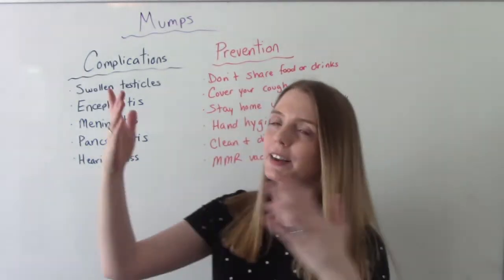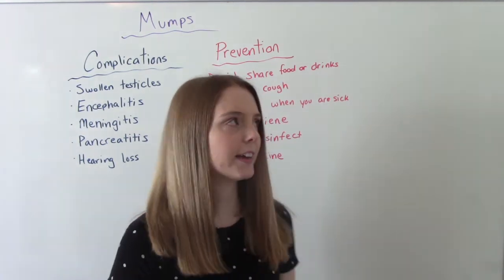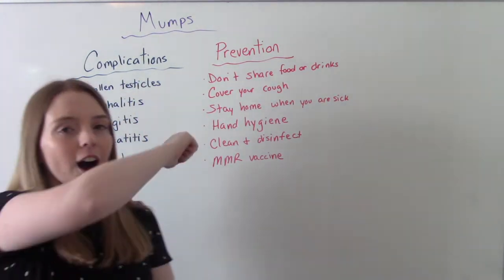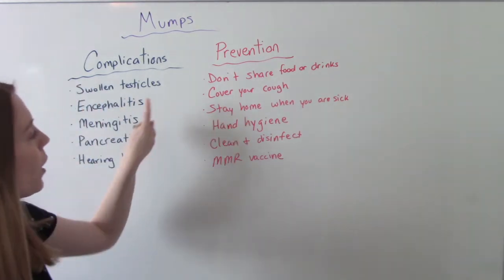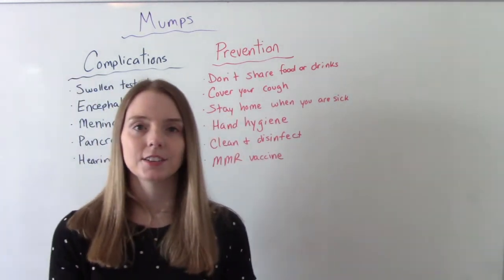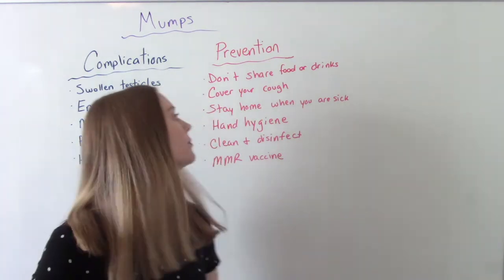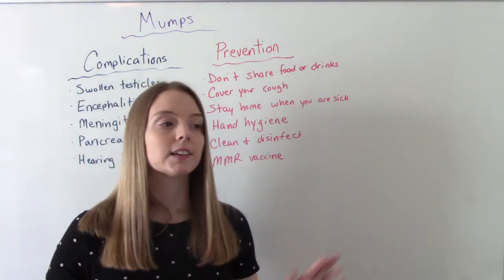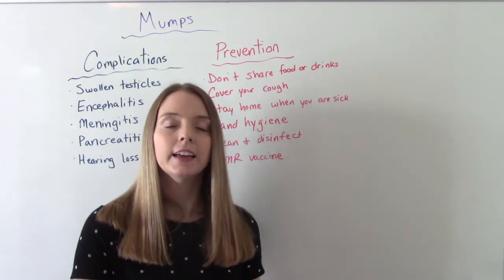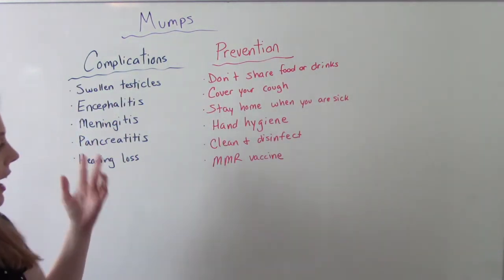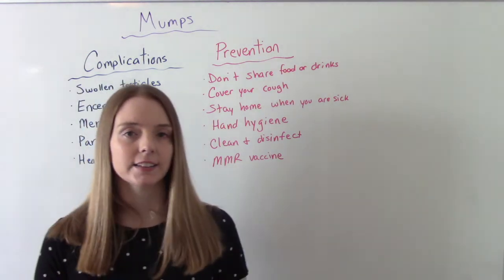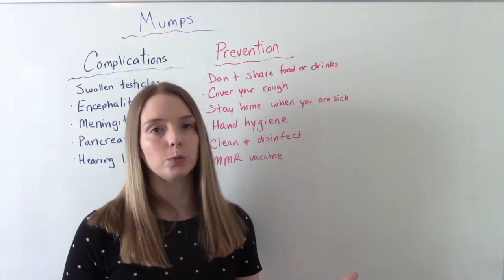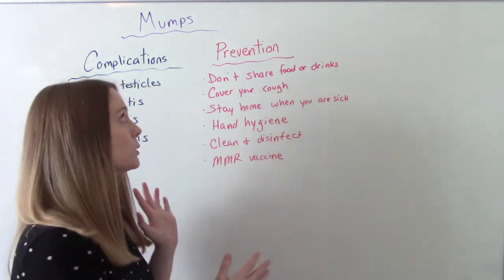Of course, we don't want these things to happen. We don't want to get mumps in the first place, so how do we prevent it? Don't share food, drinks, utensils, or cups. Cover your cough or sneeze. When you're sick, stay home — or when your kids are sick, have them stay home. Don't send them to school so they can infect other children. And of course, the most recommended thing is to get vaccinated if you are able. The MMR vaccine — that's two doses — usually recommended before a child would even start school. And that's the best way to prevent getting the mumps.